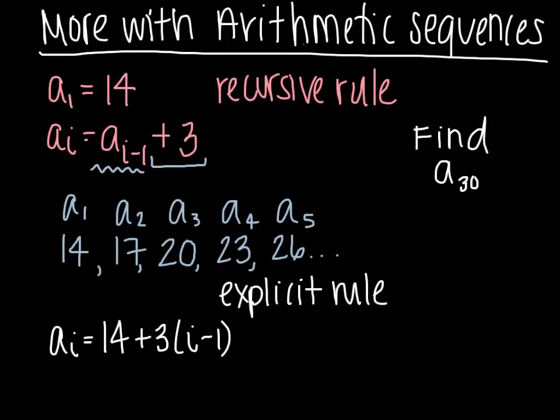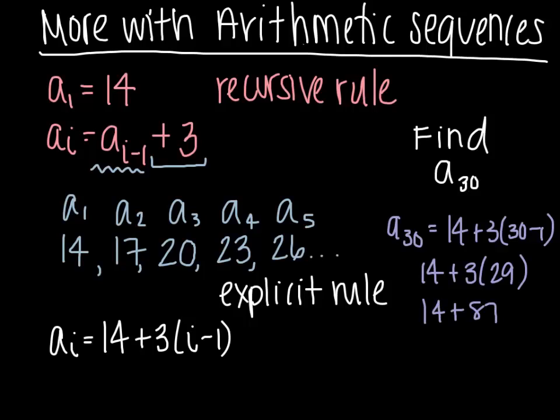So all I have to do is say, okay, a sub 30 is going to equal 14 plus 3 times 30 minus 1. That means all I have to do is take 14 and add 3 twenty-nine times. 3 times 29 is 87, so 14 plus 87. That means that a sub 30 is 101.